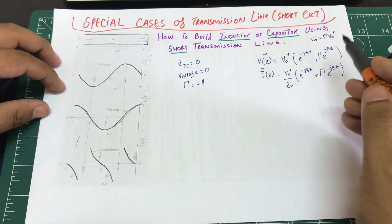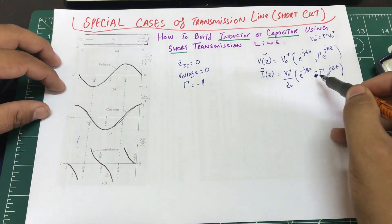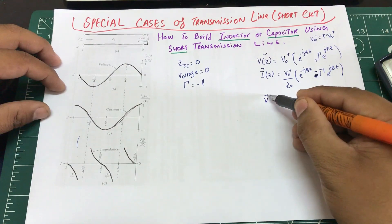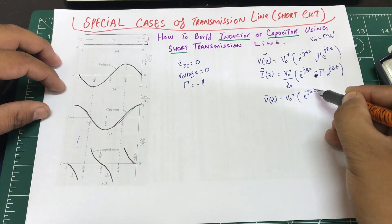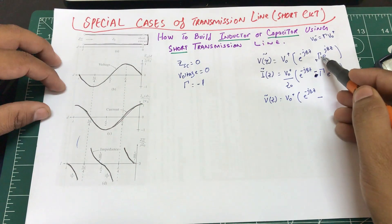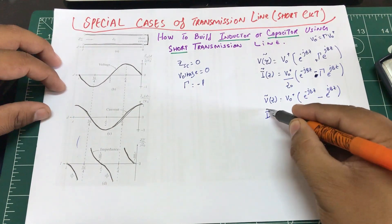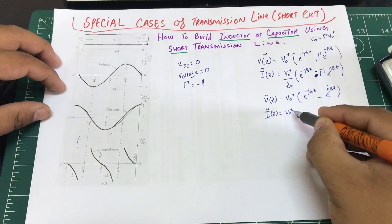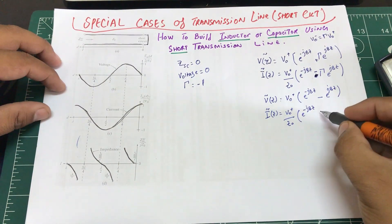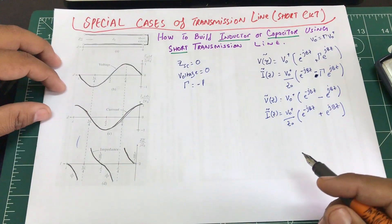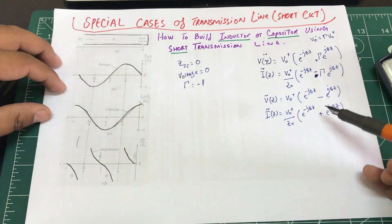Since Γ = −1, plugging that in, V(z) becomes V₀⁺ · [e^(−jβz) − e^(jβz)], and I(z) becomes (V₀⁺ / Z₀) · [e^(−jβz) + e^(jβz)].